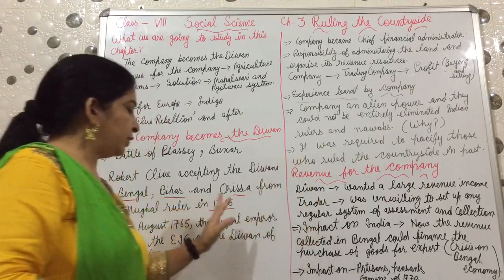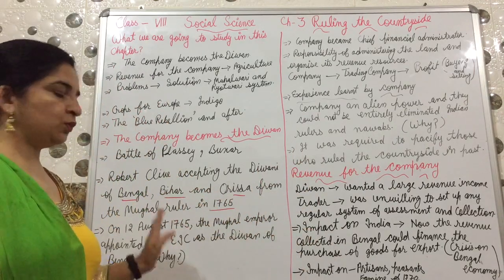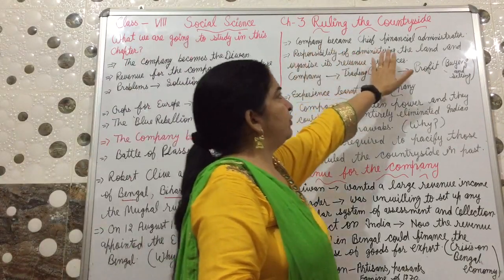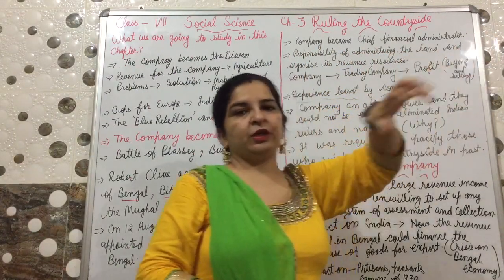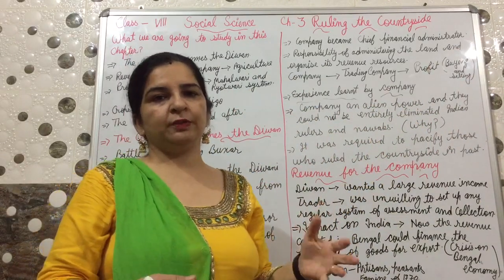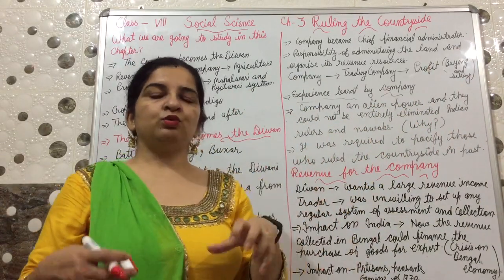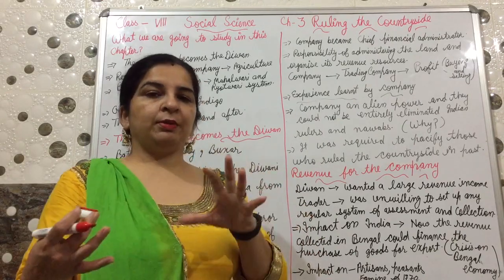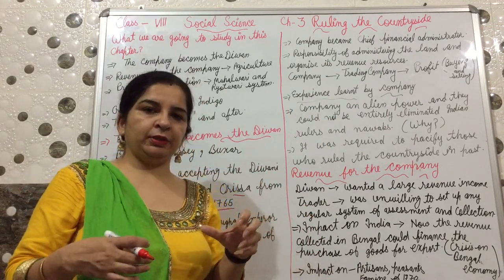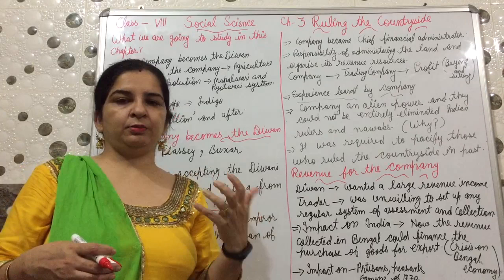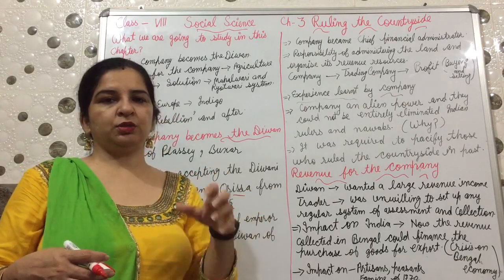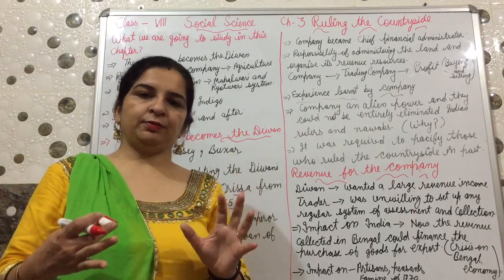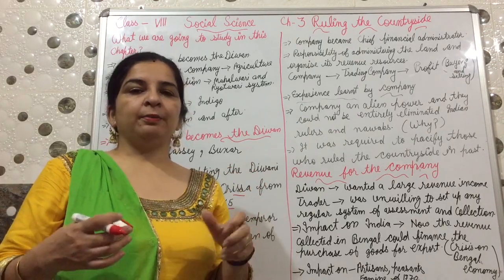After getting this Diwani, the company became the Chief Financial Administrator, meaning all finance-related work now came into the hands of the company. Previously, the Indian rulers — the Nawabs — were also collecting taxes. But now all that power came under the company's hands. The Indian rulers who were there, the Nawabs who were there, they used to collect taxes and then manage and distribute it among the public.